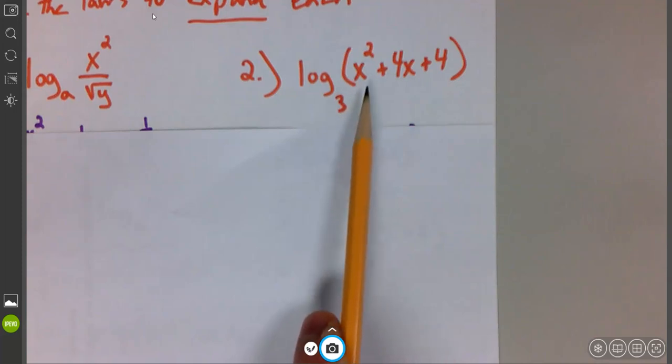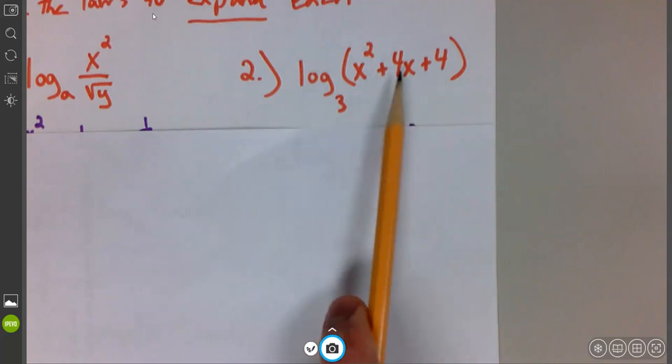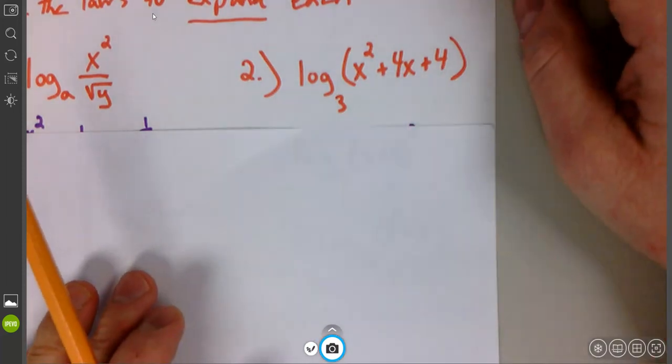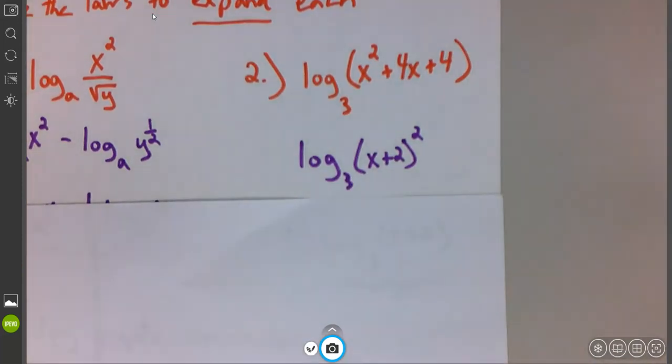It looks like all those other things we factor a million times. So we want two numbers that multiply to 4 and add to 4. Well, they're both 2, x plus 2 and x plus 2, which happens to be x plus 2 squared.